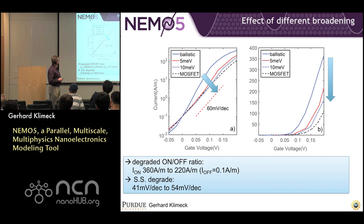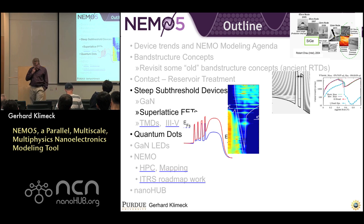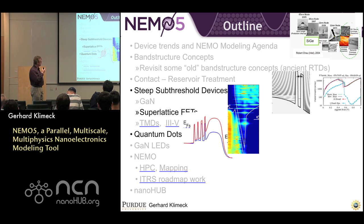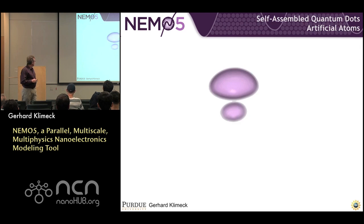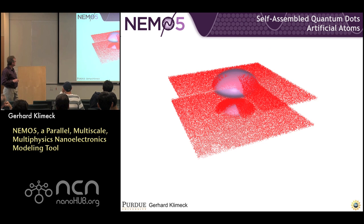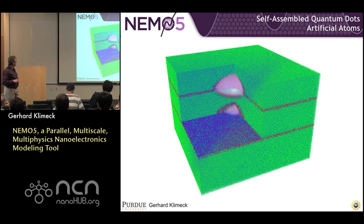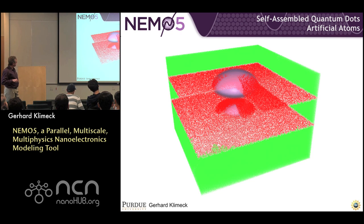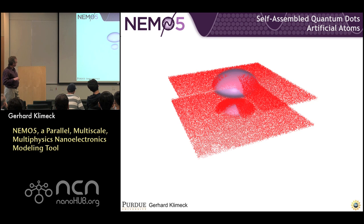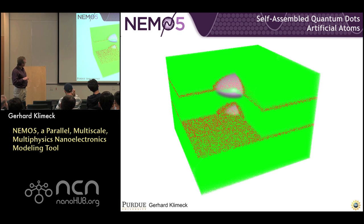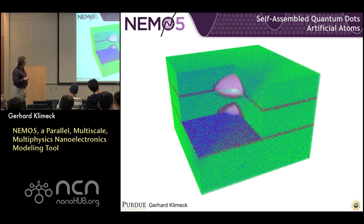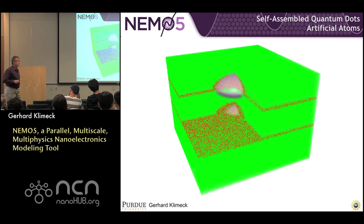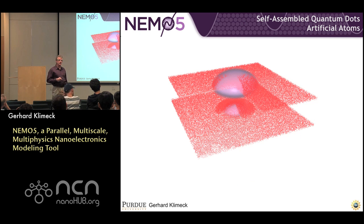Now I'm going to switch gears completely to optical devices and some quantum dot work that, while somewhat ancient, puts validity on some of the models we use. Here's a quantum dot molecule — the red are the indium atoms, green are the gallium atoms, and blue are the arsenic atoms. You can see a wetting layer and then confining indium atoms in a double dot. This is a pretty complex structure in terms of number of atoms and the strain fields that align the dots on top of each other.